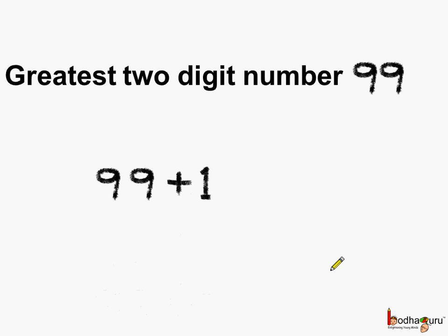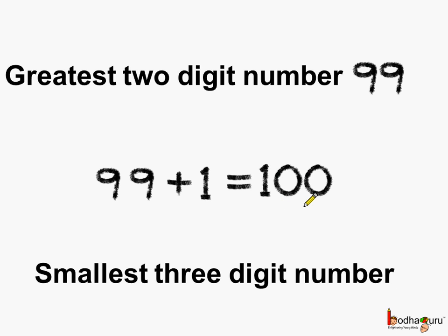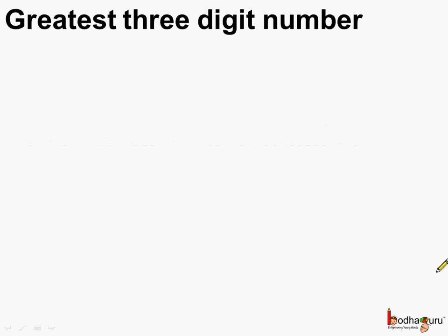And what is 99 plus 1? It is equal to 100. So we get the smallest 3-digit number. 100 is the smallest 3-digit number. If we keep going like this...